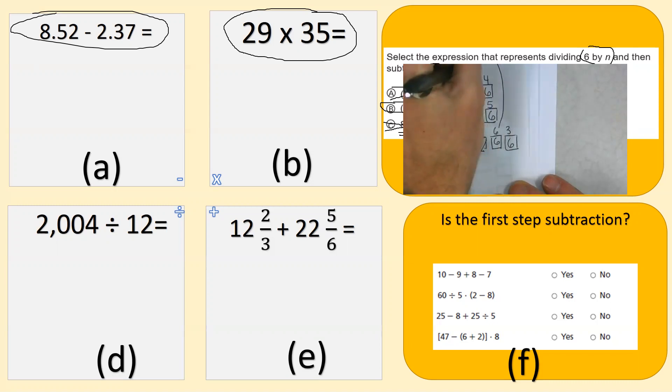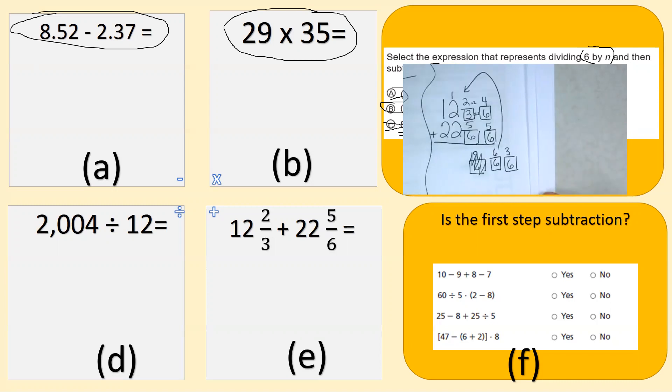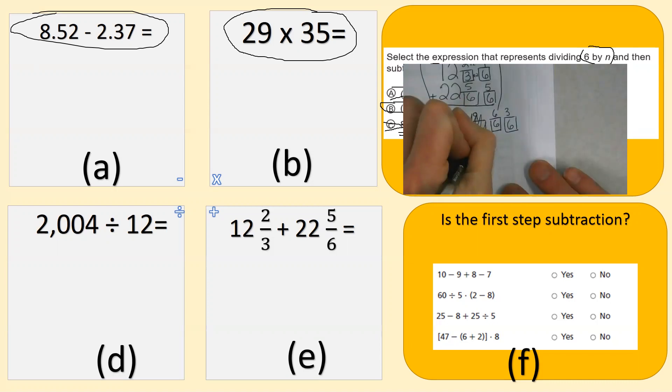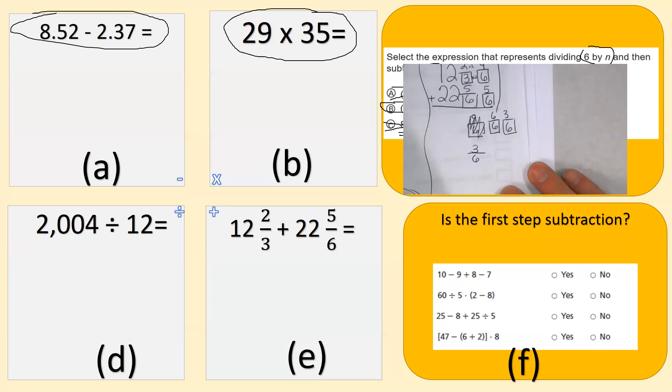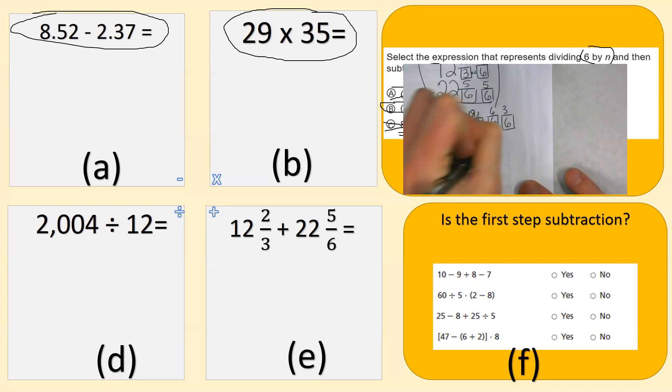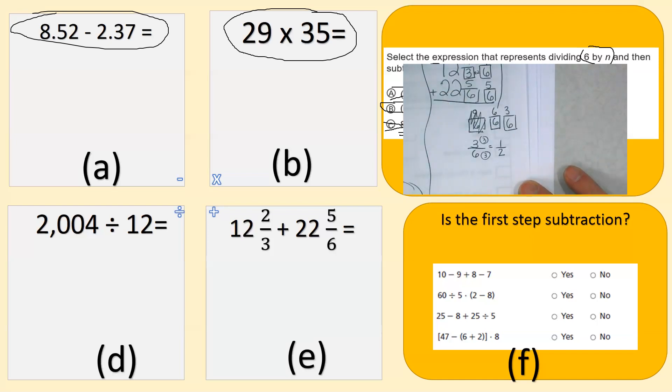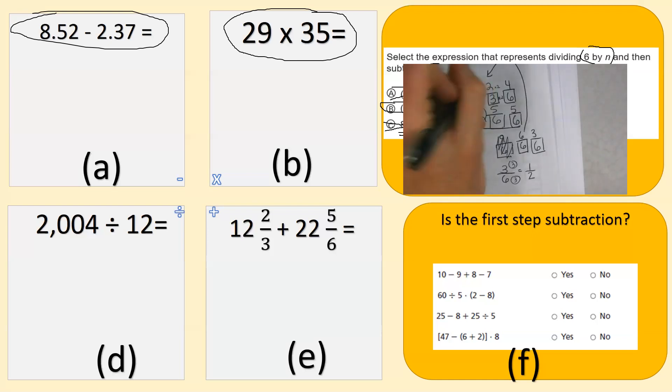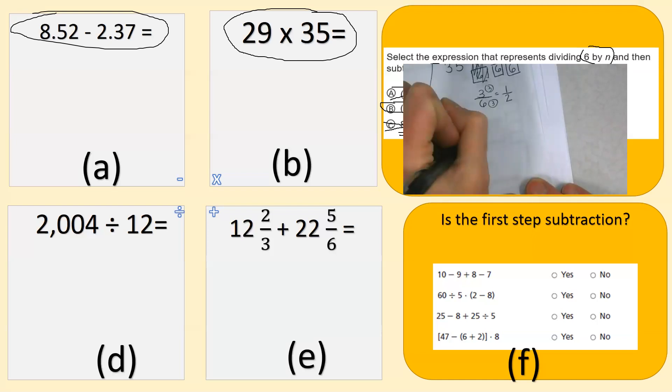And then what do I have left? I have three-sixths left. Well, what is three-sixths? Three-sixths is one half. It's the same thing as one half because I can simplify it by 3. 12 plus 22 plus 1 is 35. So the answer all day is 35 and one half.